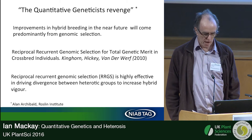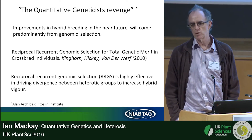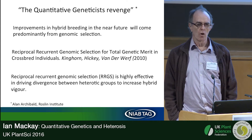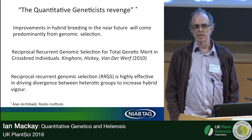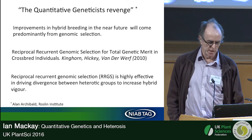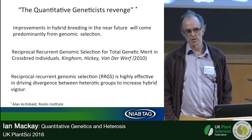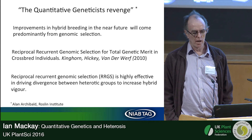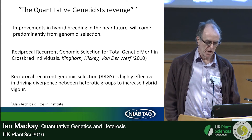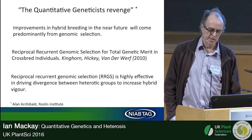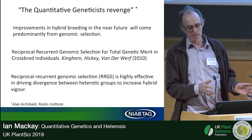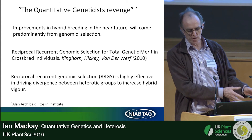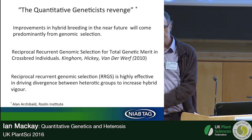I'll finish with what Alan Archibald from the Roslin Institute has called the quantitative geneticists' revenge: genomic selection. Genomic selection is a way of calibrating high-density genetic markers against the traits we wish to predict — predominantly yield. It works, and it is in the process of revolutionizing animal breeding, and it's undoubtedly being incorporated into major international hybrid crop breeding programs too. It's called the quantitative geneticists' revenge because essentially we can bypass all the explanations for how traits are made up and go straight from yield to high-density genomics information.